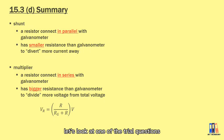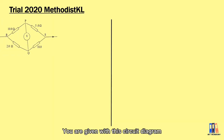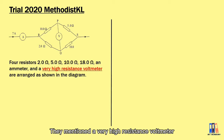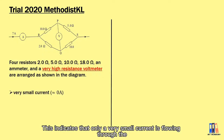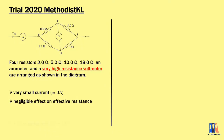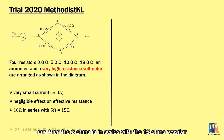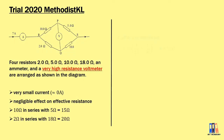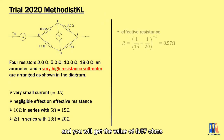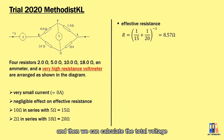Before we end, let's look at a trial question. You are given a circuit diagram with four resistors, an ammeter, and a very high resistance voltmeter. Since the voltmeter has very high resistance, only approximately zero current flows through it, so its connection has negligible effect on the effective resistance. We calculate: the 10 ohm is in series with the 5 ohm giving 15 ohm, and the 2 ohm is in series with the 18 ohm giving 20 ohm. Then we calculate the effective resistance of the 15 ohm in parallel with the 20 ohm resistor, getting 8.57 ohm.